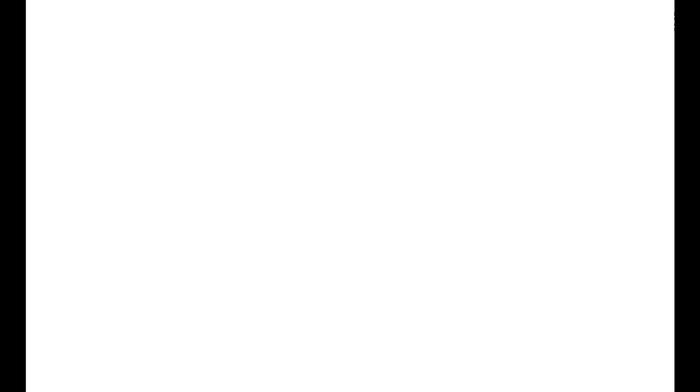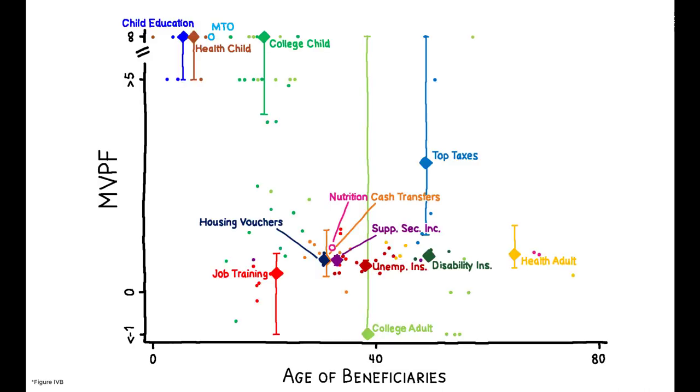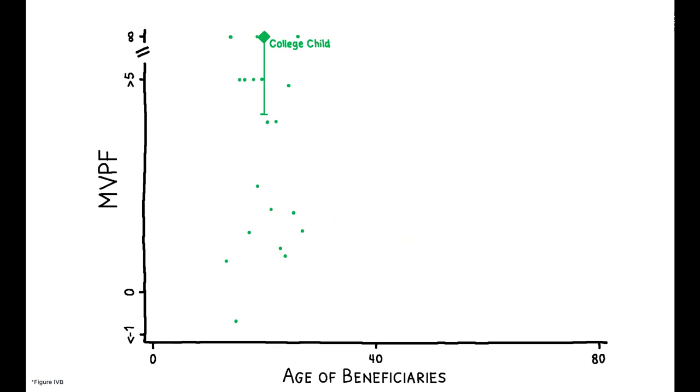Now, it's important to highlight several caveats when interpreting these results. First, the broader patterns don't always hold across each individual policy. Some college policies, for example, have very low MVPFs. These tend to be policies that provide transfers to existing students without actually changing their educational attainment.